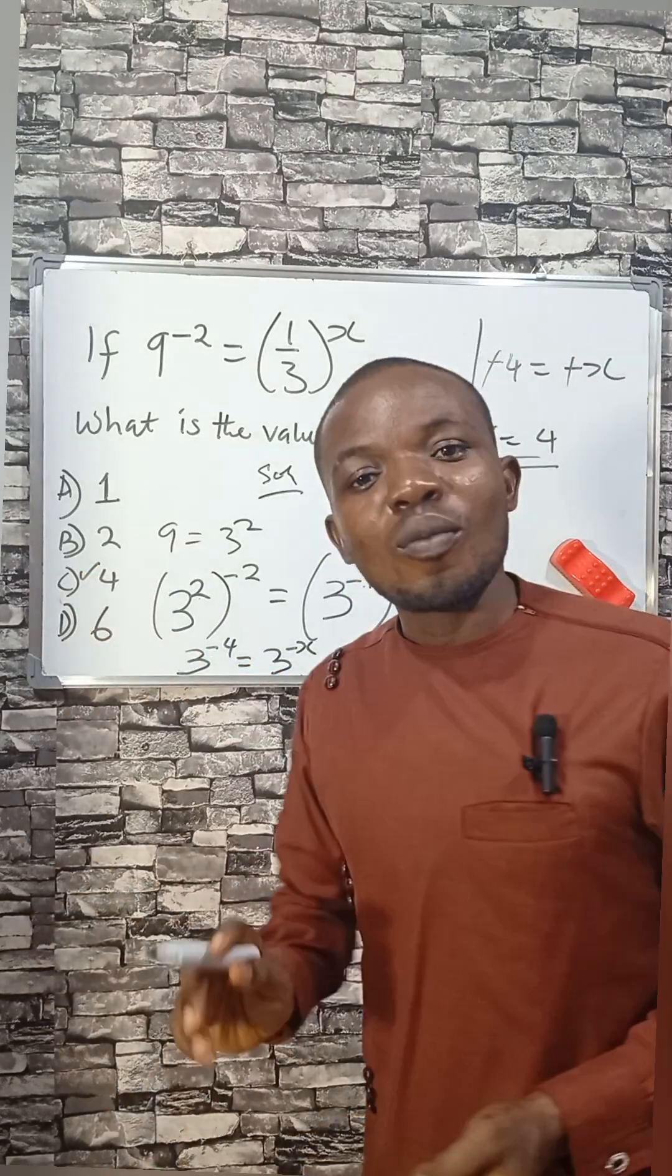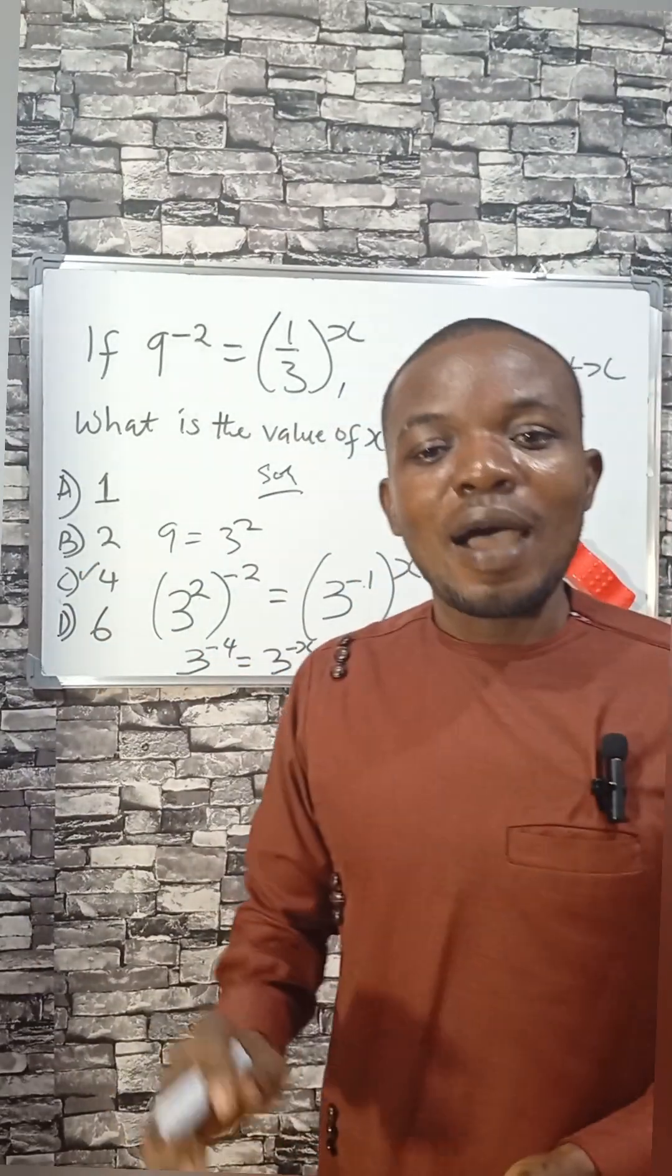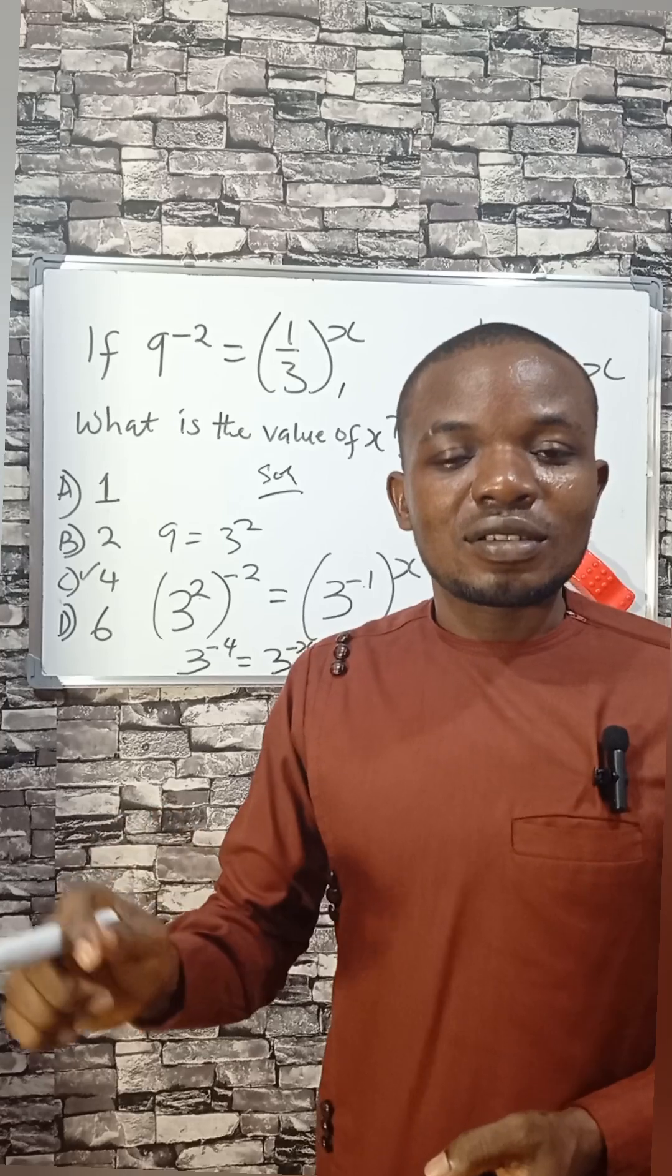So we have that x equals 4, which is option C. For more WASSCE questions and many other questions outside WASSCE, subscribe to this channel.